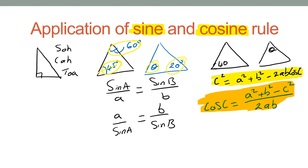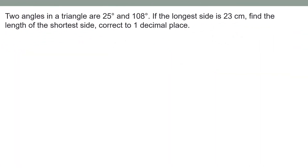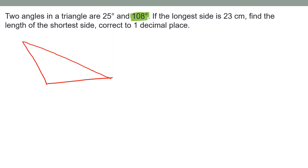Let's try some problems. Two angles in a triangle are 25 degrees and 108 degrees. If the longest side is 23 centimeters, find the length of the shorter side correct to one decimal place. One angle is obtuse, so it is an obtuse triangle. I'll sketch a diagram first — the obtuse angle of 108 degrees, and 25 degrees placed on the triangle.